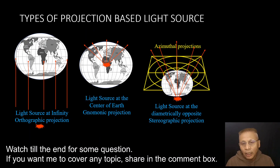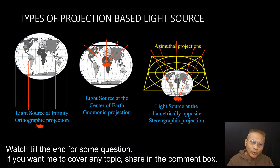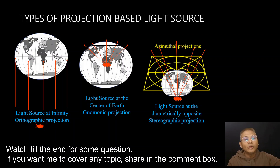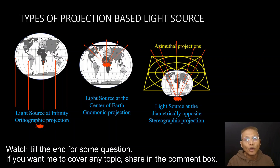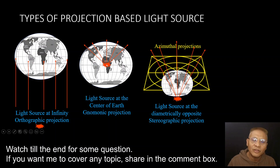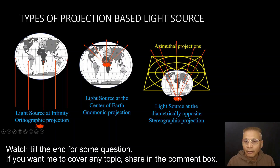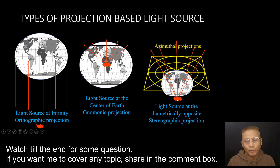Depending upon where you keep the light used to project the map or chart, projections can be classified as follows. If the source of light is kept at infinity, every ray coming toward the reduced earth can be considered as parallel to each other — this is known as an orthographic projection. If the source of light is at the center of the earth, it is known as a gnomonic projection. If the source of light is at the diametrically opposite place on the earth, that is known as a stereographic projection.